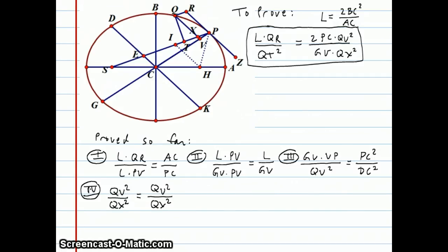Hi, I'm Gary Rubenstein, and this is the eighth and final part of my Newton's Principia Explained. So far, the thing we're trying to prove is this theorem that I have up here, that L times QR over QT squared is equal to 2PC times QV squared over GV times QX squared. And L is a constant related to the ellipse.